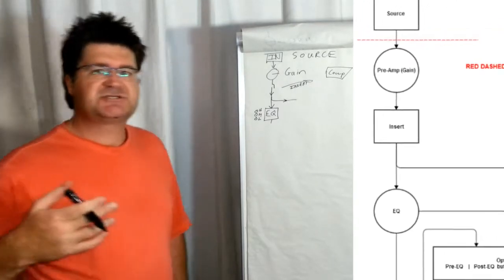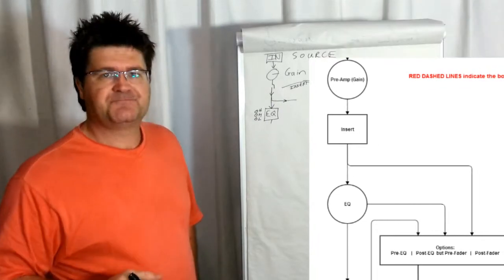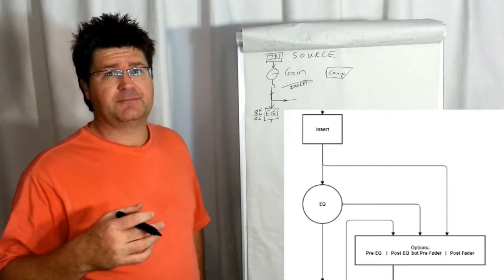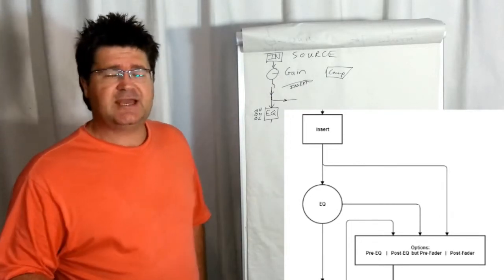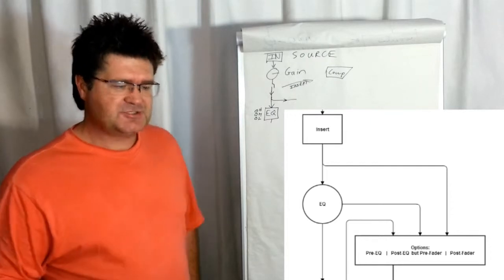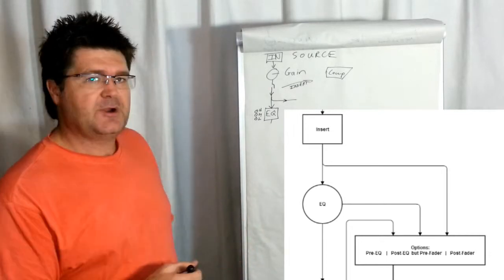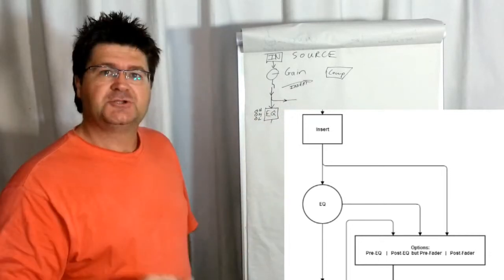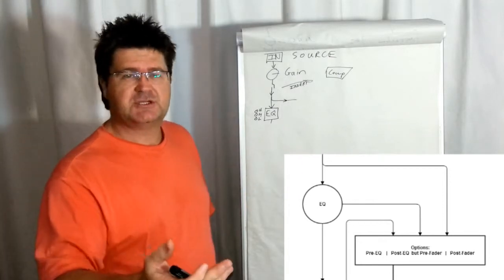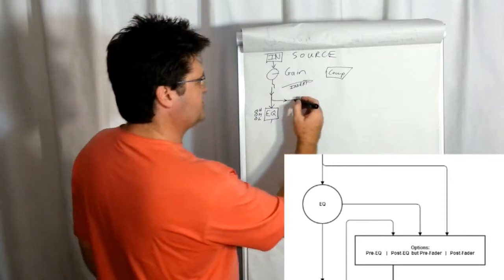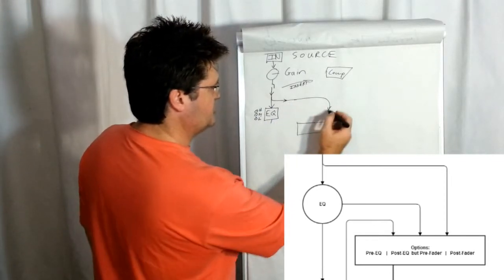Now, some desks call them auxiliary. Some desks call them monitors. Some desks call them buses. Just out of interest's sake, the new Behringer X32 has entirely stopped using the term aux. And everything is just referred to as buses. For now, just be aware that the signal can split here, to your auxiliaries. In other words, to the signals that go to monitors or headphones, depending on whether it's live or in studio. So I'm going to just do that for the moment. You can see it on your diagram as well. I hope I'm not going too big or too small.